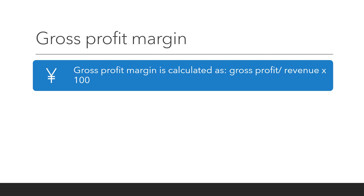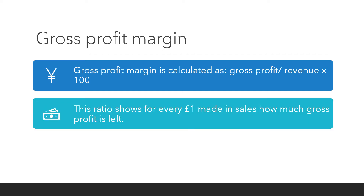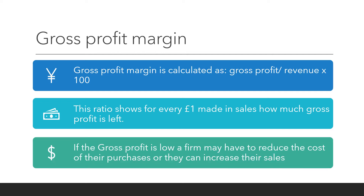Gross profit margin. Gross profit margin is calculated as gross profit divided by revenue, times by 100. This ratio shows that for every one pound the business makes in sales, how much gross profit they have left. If the gross profit is low, the firm may have to reduce the cost of their purchases, or they can increase their sales.